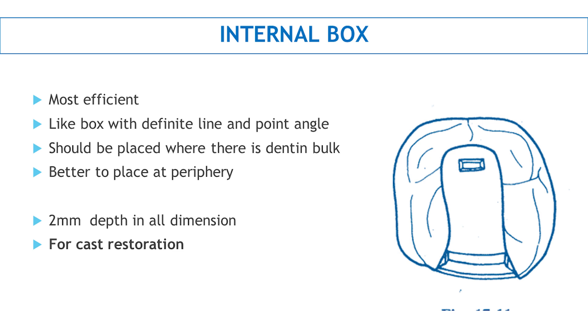This is given at the periphery where you have good amount of dentin. The depth is around 2 mm all over, and this is considered one of the most efficient secondary retention and resistance forms for cast restoration.